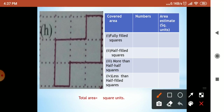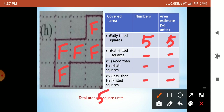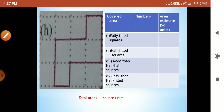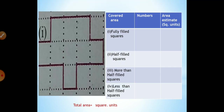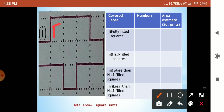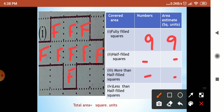Let's check the next sum. Fully filled — this type of sum, you will not get any doubt because everything is fully filled. The answer is nine. Half filled — not there. So the answer is nine square units.